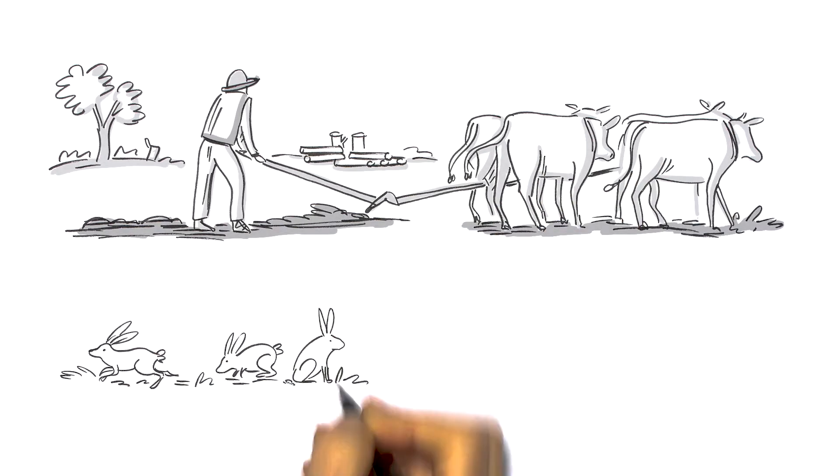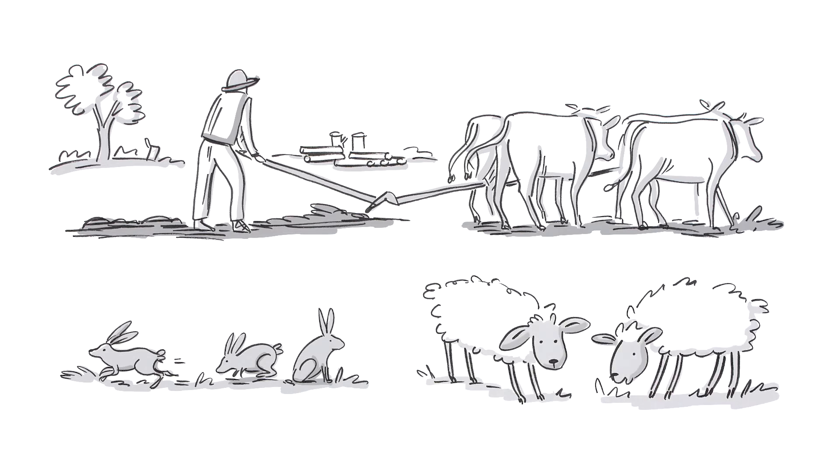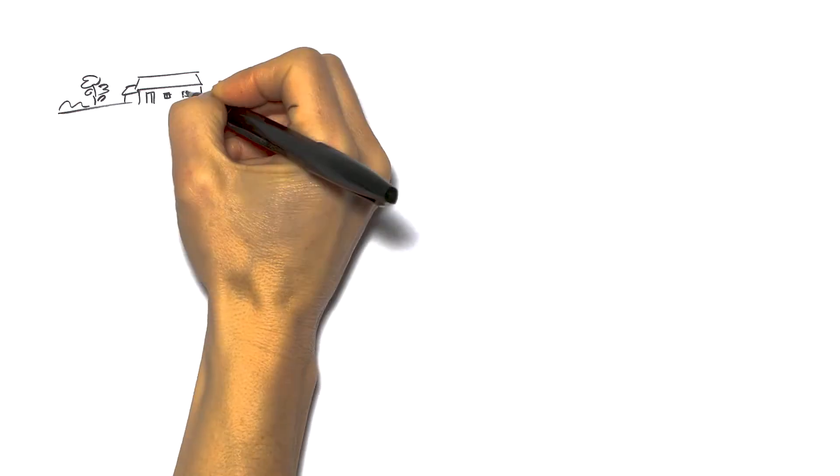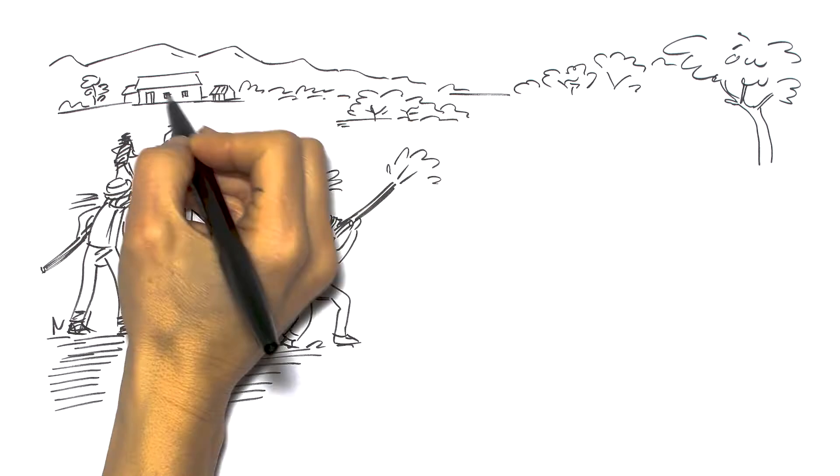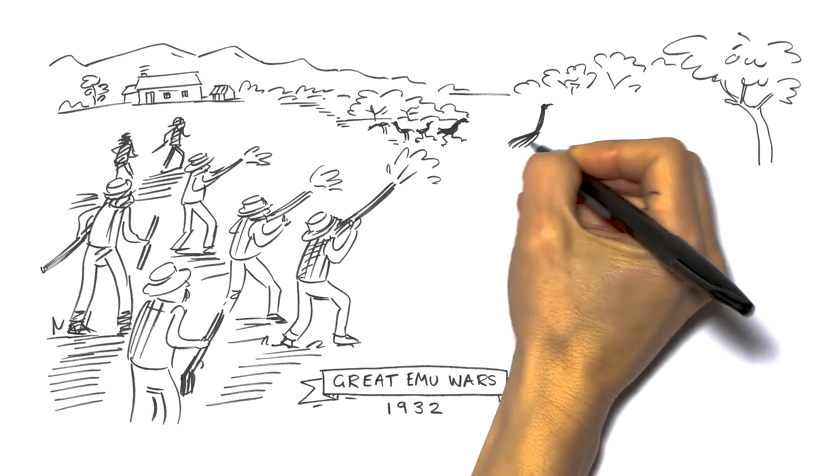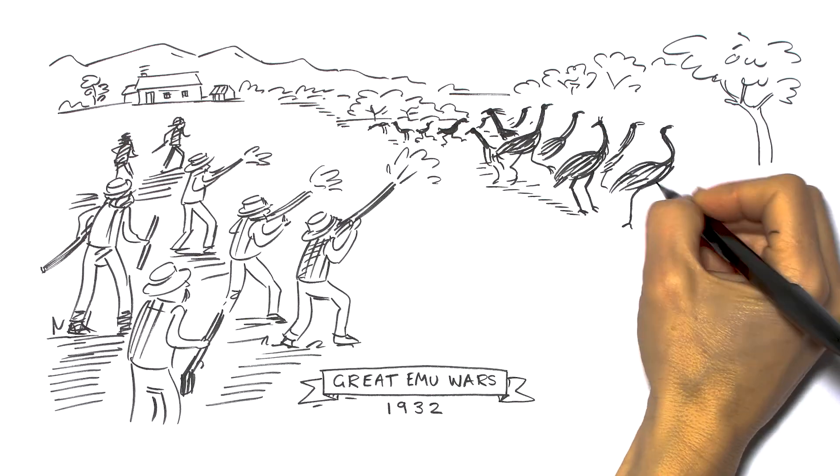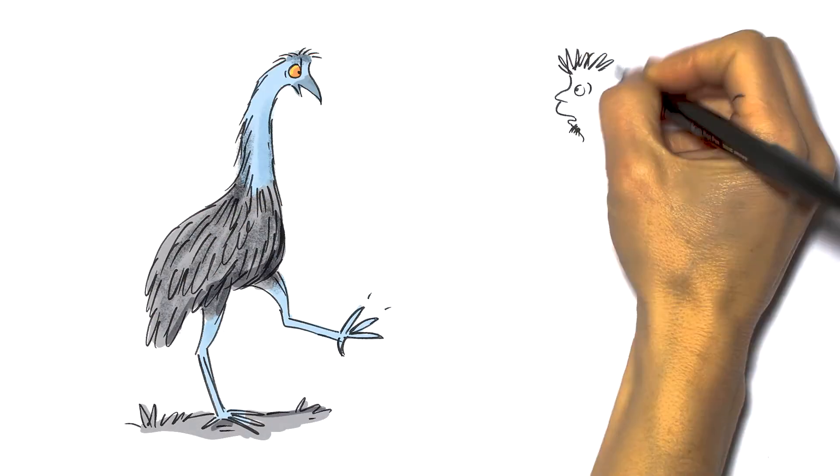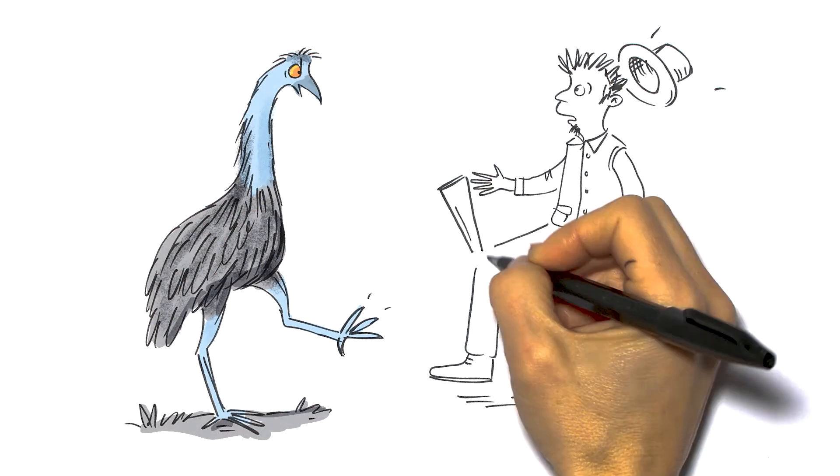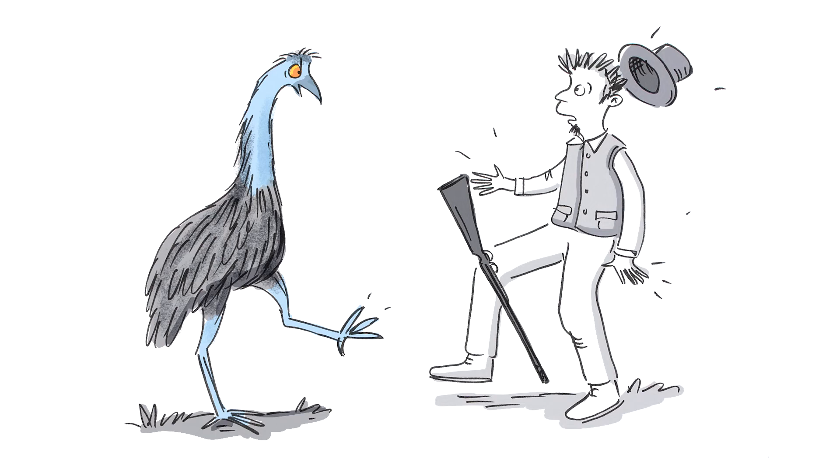This new bunch treated the land very differently and brought new animals with them too. They decided we weren't welcome here anymore, which led to the Great Emu Wars of 1932. Or as we call them, the Great Human Wars. We managed to keep this army of new humans on the back foot at first. But we've lost a lot of ground since then. And we're not the only ones.